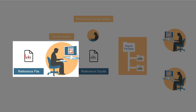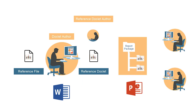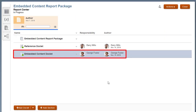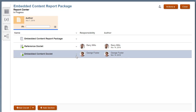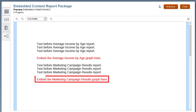Whenever a doclet author modifies the available content in a reference file and uploads the changes, the content is refreshed in the associated doclet. Both Word-based and PowerPoint-based report packages support embedding content from reference files and reference doclets. This tutorial focuses on embedding reference doclet and reference file content in Word-based report packages, but the procedure is the same for PowerPoint-based report packages. You are assigned as the author of this doclet, and you want to embed available content from both a reference doclet and a reference file.